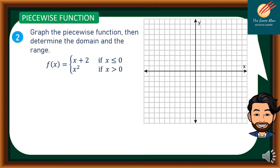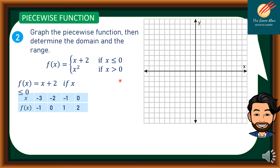Another example: graph the piecewise function and determine the domain and range. Given f(x) = x + 2 if x ≤ 0, and f(x) = x² if x > 0. Using the table of values for x ≤ 0: if x = 0, f(x) = 2; if x = -1, f(x) = 1.